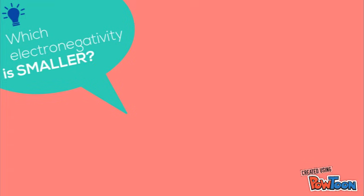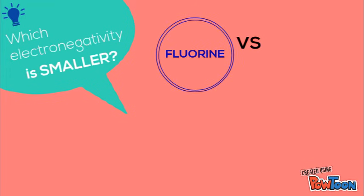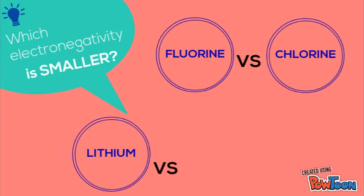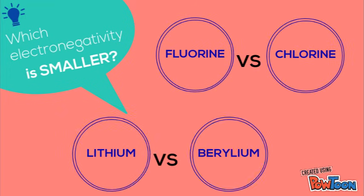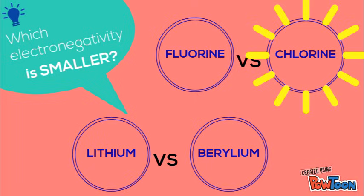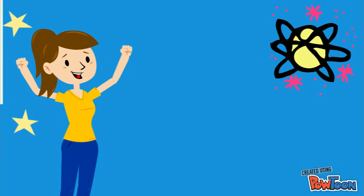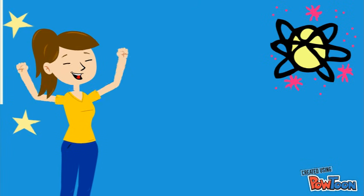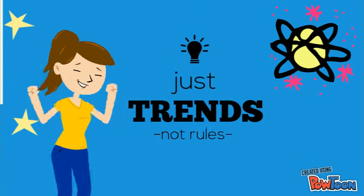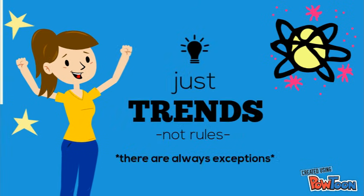Now knowing this trend, which electronegativity is smaller? Fluorine or chlorine? Lithium or beryllium? Pause the video until you have an answer. If you think chlorine's electronegativity is smaller, you're correct. If you think lithium's electronegativity is smaller, you're correct. These are all of the trends that you need to know. Remember that these are just trends, not rules, so there are always exceptions.